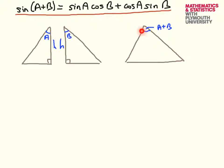And that's what I have drawn here. Now this side is the same as this side, so let me give it a name — I'm going to call it little p. And similarly, this side is the same as this side, so I will give it a name and call it little q.